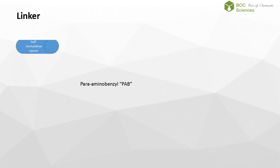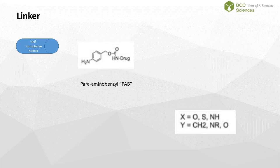The self-immolative spacer is the portion of the linker that chemically undergoes a rapid and spontaneous intramolecular reaction that liberates the free drug following activation by the trigger. For example, if a heteroatom is released by a trigger in close enough proximity to a carbonyl, a highly favored five- or six-membered ring will form and release the free drug. In the case of the dipeptide linkers, a para-aminobenzyl group is initially released following enzymatic cleavage, and a 1,6-elimination of the PAB group releases the free drug.